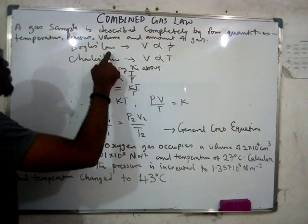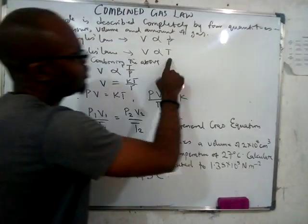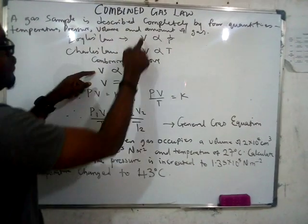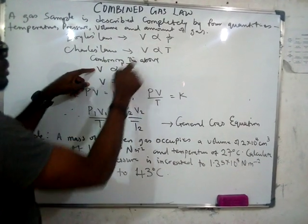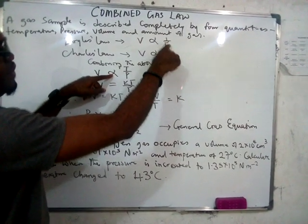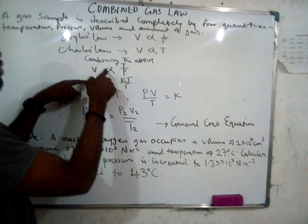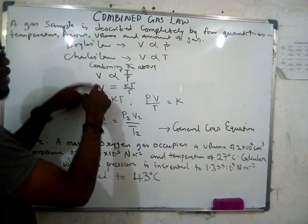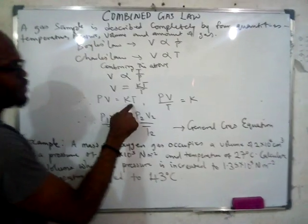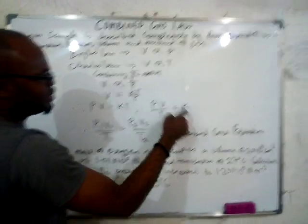Boyle's law states that volume is indirectly proportional to pressure, and Charles' law states that volume is directly proportional to temperature. Combining these two: V is directly proportional to T on top and P below. Introducing constant k so you can remove the proportionality sign, you have V = kT/P.